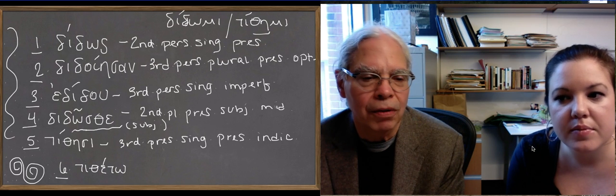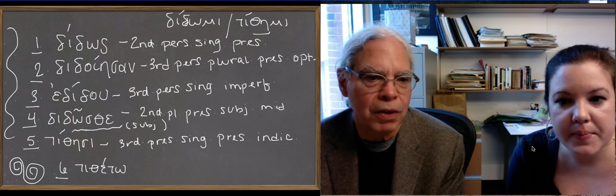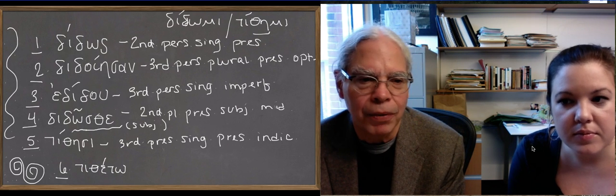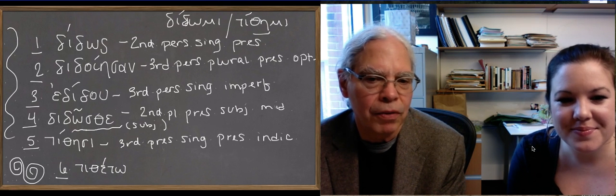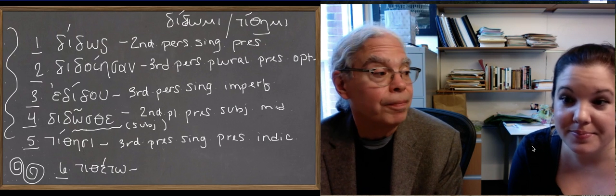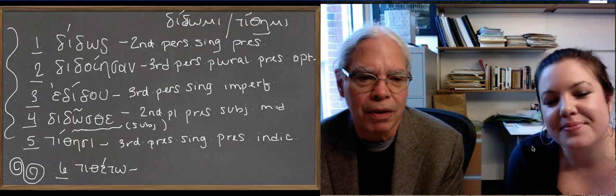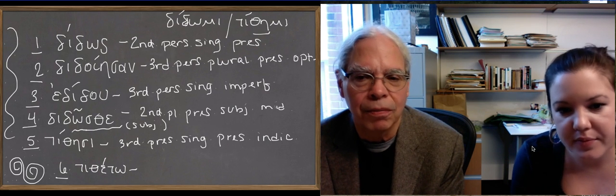Now let's move to the last one. We've got another imperfective aspect stem. The stem here has become theta-epsilon. We're not worried about that. We just ignore it. And we have the suffix τω. What is that suffix? Imperative. Yeah, we just learned that. That's the third person singular active imperative. So what have we got? Third person singular present active imperative. Period.